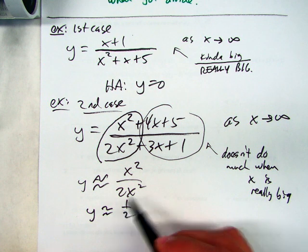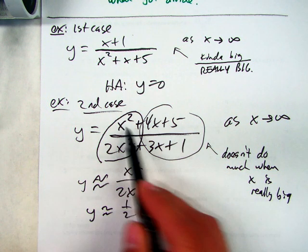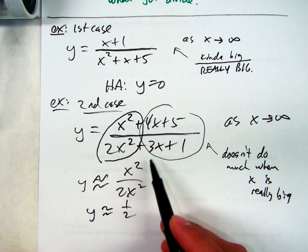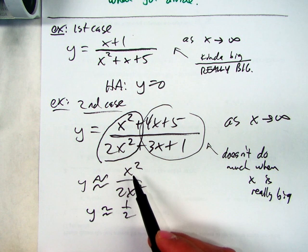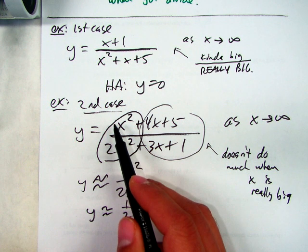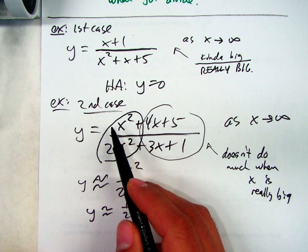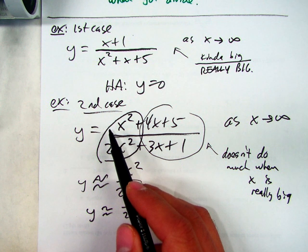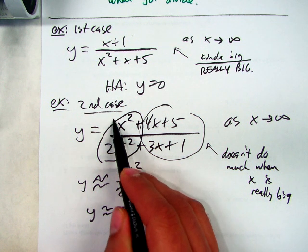So if you see an equation like that with the same degree, right away you say there's a horizontal asymptote and the equation is y equals 1 divided by 2.